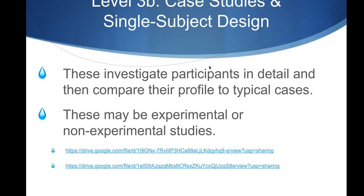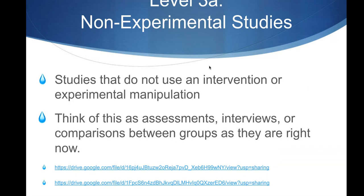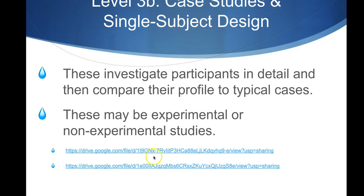Now we're falling down to a level three — level 3A, non-experimental studies. These are studies that do not use an intervention or experimental manipulation. Think of this as assessments, interviews, or comparisons between groups as they are right now. We're not manipulating anything, not giving them therapy, not giving them anything. It's just, 'What's your functioning level right now?' And maybe we'll compare it to another group, but there's no intervention involved. So it's a level three study.